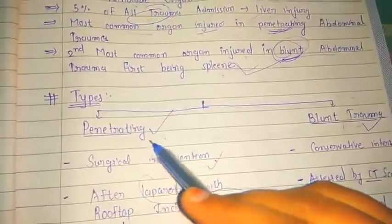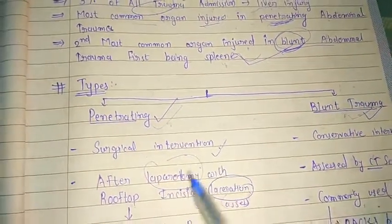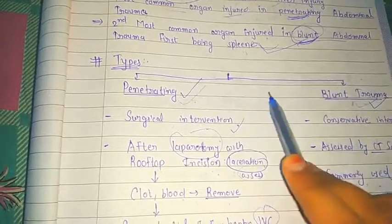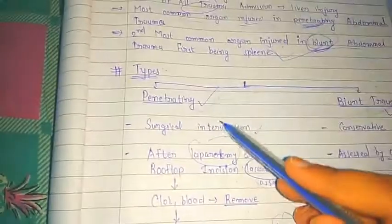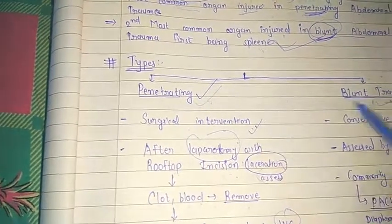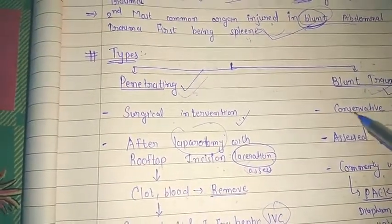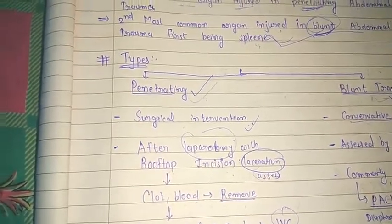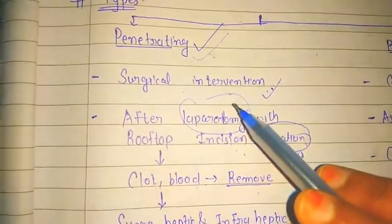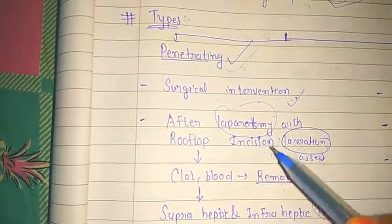There are two types of injury: penetrating or blunt. The operation required differs for each. In penetrating injury there should be surgical intervention, while in blunt trauma there should be conservative intervention. In penetrating intervention, after laparotomy with rooftop incision is used.